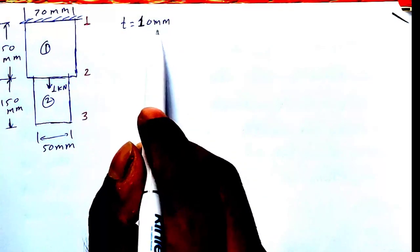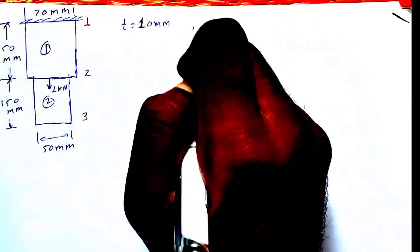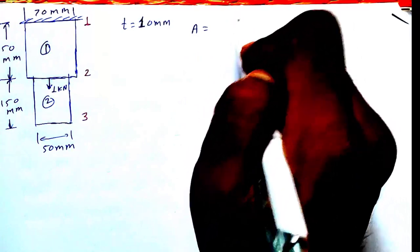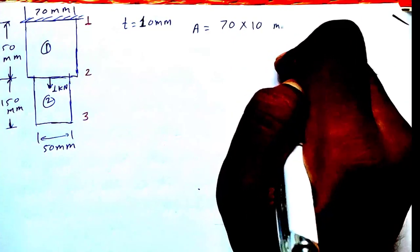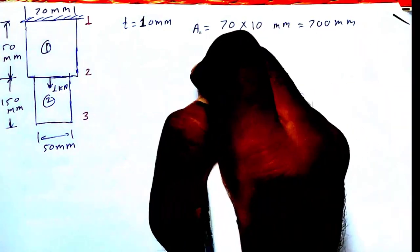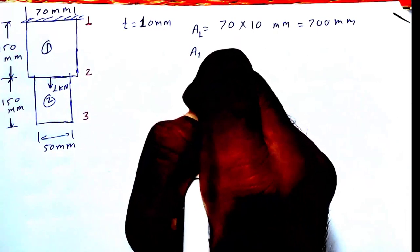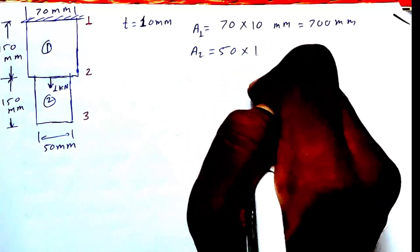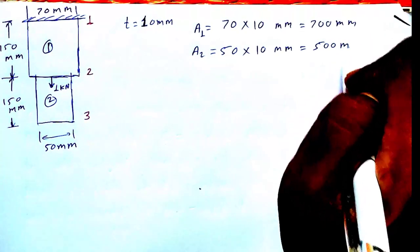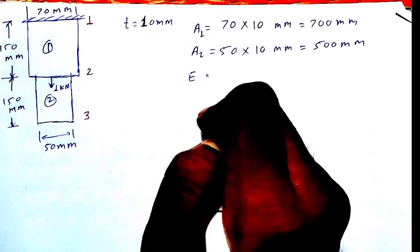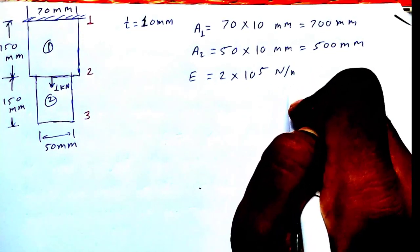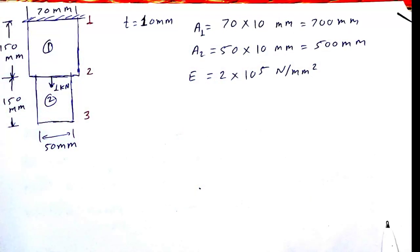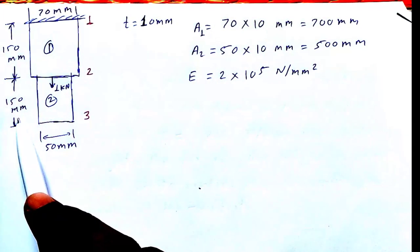The thickness is 10 mm. The cross-sectional area A1 equals width times thickness: 70 into 10 = 700 mm². Similarly, area A2 equals 50 into 10 = 500 mm². Young's modulus E is common for both elements: E = 2 into 10 raised to 5 N per mm square. L1 = 150 mm and L2 = 150 mm.